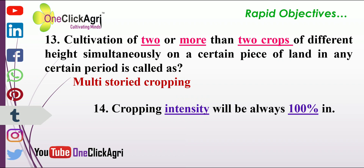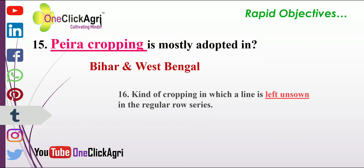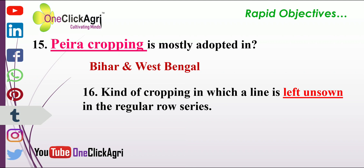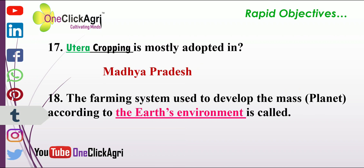Cropping intensity will always be 100 percent in mono cropping. Para cropping is mostly adopted in Bihar and West Bengal in India. The kind of cropping in which a line is left unsown in the regular row series is called skip cropping. Utera cropping is mostly adopted in Madhya Pradesh. The farming system used to develop the mass according to the earth's planetary environment is terra farming.